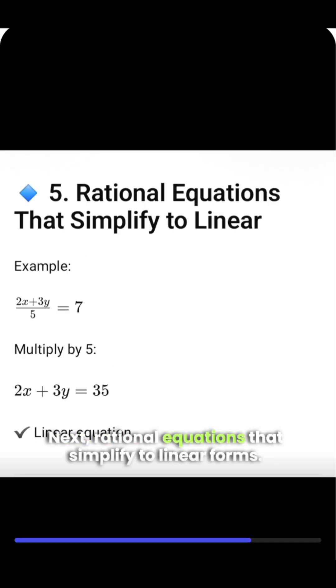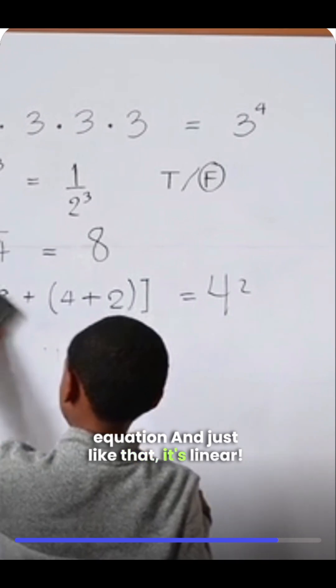Next, rational equations that simplify to linear forms. For instance, multiply by 5 to get a linear equation. And just like that, it's linear.